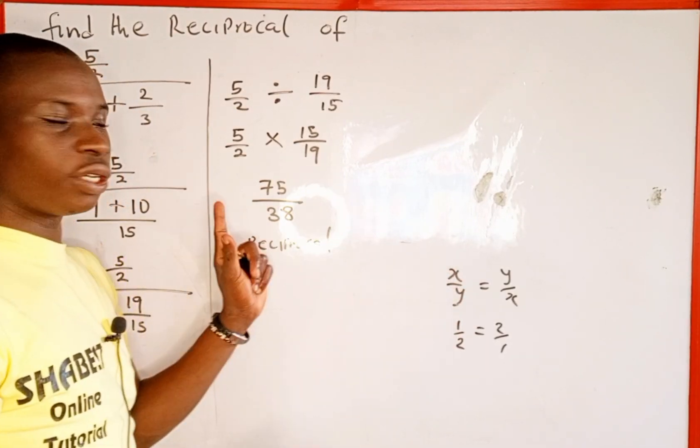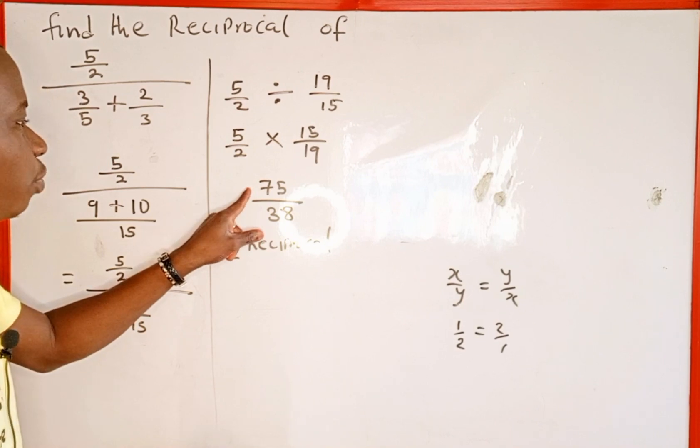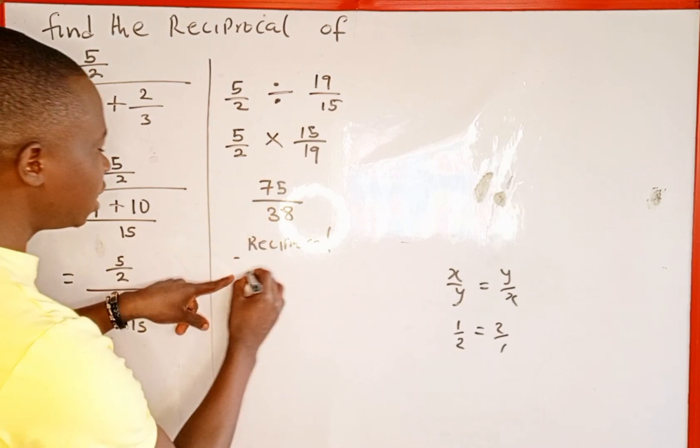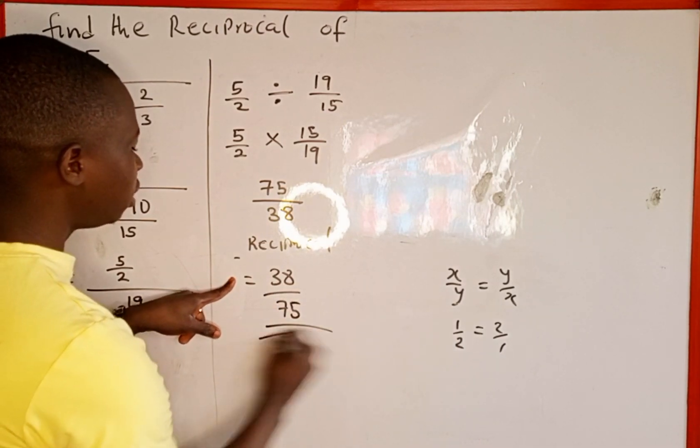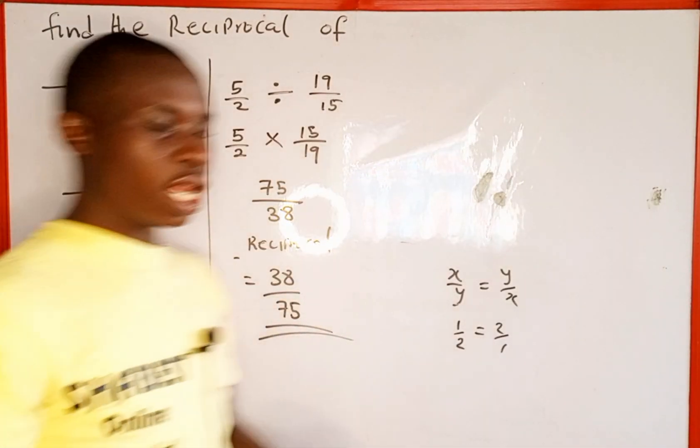What do you notice? We are just switching. This x is going to come down, y will go up, that's a reciprocal. Therefore, reciprocal of 75 over 38 is the same as 38 over 75. So this is the reciprocal.